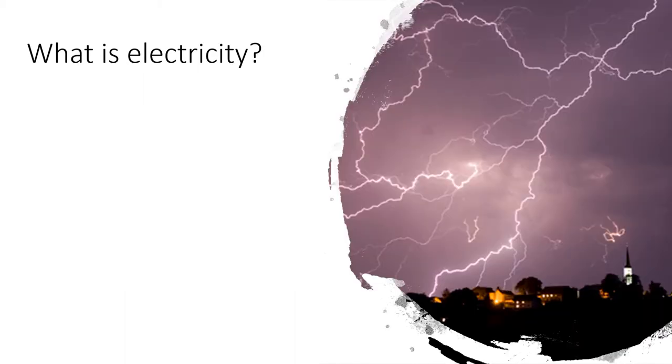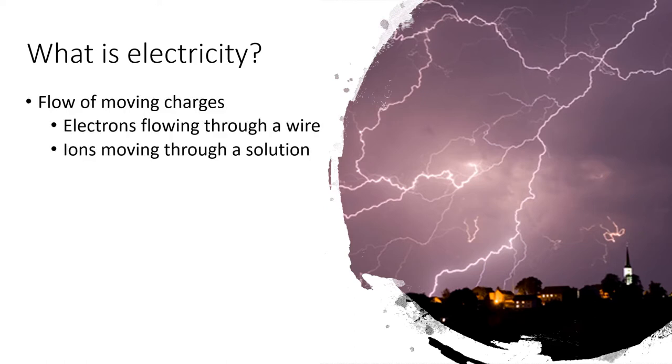So think for just a moment about what electricity is. If we're talking about the electricity that's powering your computer or your cell phone, the electricity that makes all of our lights light up in our homes, that electricity really is just a flow of moving charges. If we're talking about electricity flowing through a wire, then the moving charges are going to be electrons. Electrons have a negative charge.